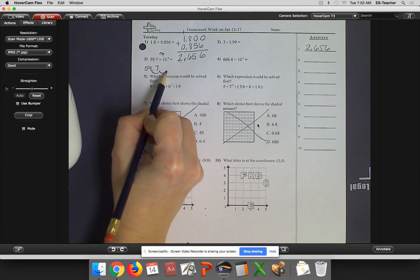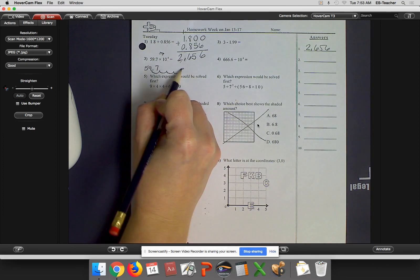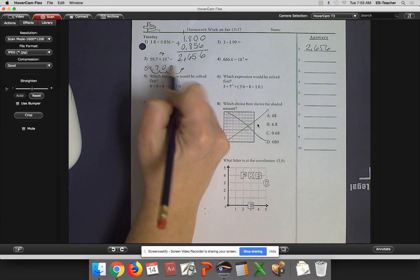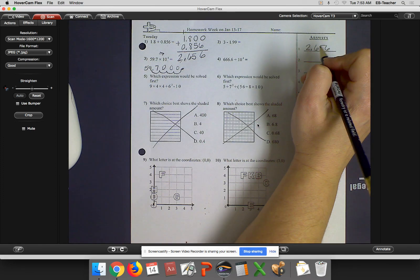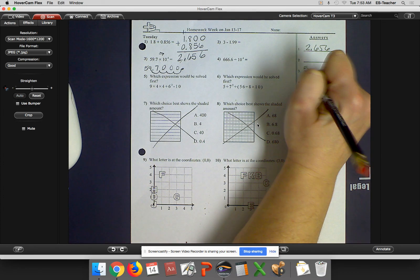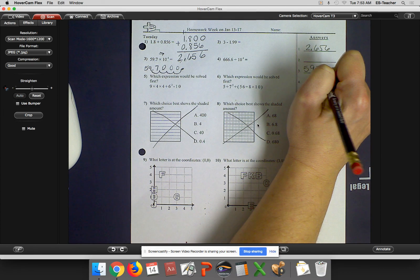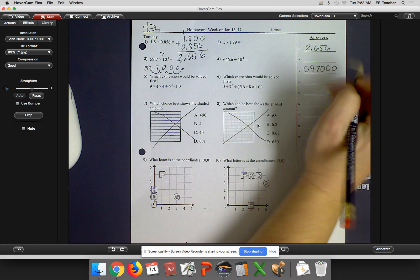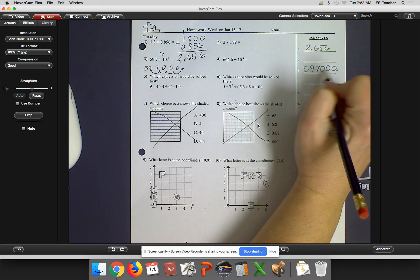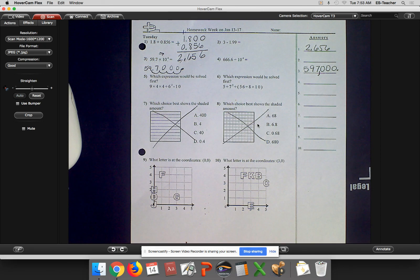1, 2, 3, 4. There's my decimal, and I'm going to put 0's in these places. So my answer for number 3 is 5, 9, 7, 0, 0, 0. The decimal is here, but you need to put in a comma. So the answer is 597,000.